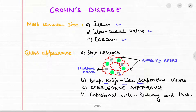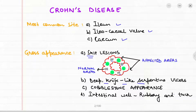There is also a cobblestone appearance in Crohn's disease, where parts of the colon look like a cobblestone street because of recurring inflammation and healing. This is similar to pseudo polyps in ulcerative colitis. The intestinal wall is rubbery and thick in Crohn's disease.